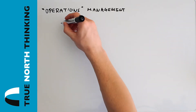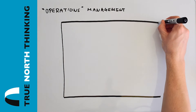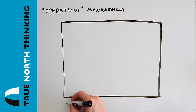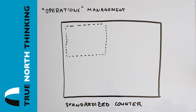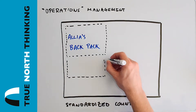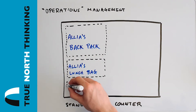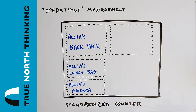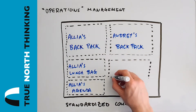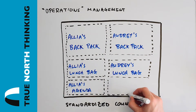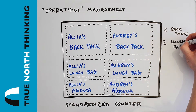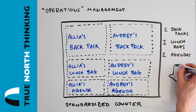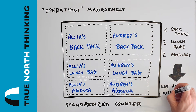In Genevieve's case, we have to establish what the standard things she needs to manage are. If we take an area of the kitchen counter and standardize the locations, we'll need space for two school bags — one for Alia and one for Audrey — two lunch bags — one for Audrey and one for Alia — and two agendas — one for Alia and one for Audrey. Now Genevieve simply has to glance at the standardized locations, and if something is missing, she will immediately know that something is wrong.